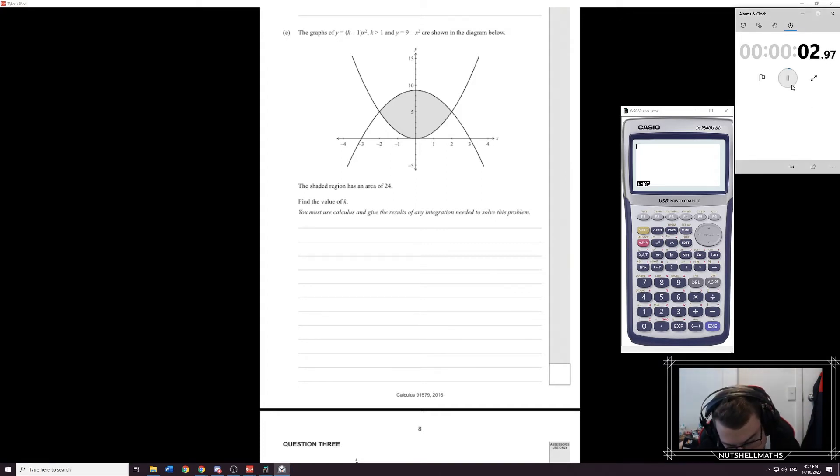So the graphs of y equals k minus 1 x squared, k is greater than 1, and y equals 9 minus x squared are shown in the diagram below. Cool. Right, this one, I'm sure we're gonna, I notice that these aren't labeled, right, there's no label telling me which graph is which, so we need to use our knowledge here.